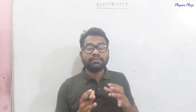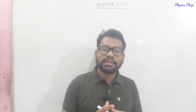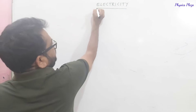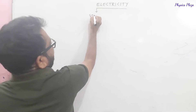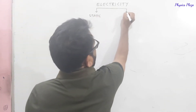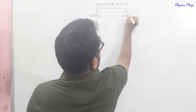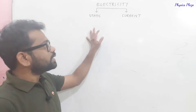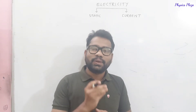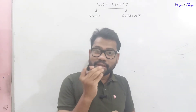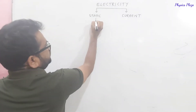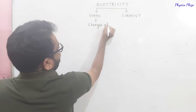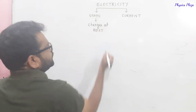Electricity is one of the important branches of physics, where we discuss about the charges and their impacts. It is of two types: static electricity and current electricity. Static means rest. So in static electricity, we discuss the charges which are at rest and their impacts — how they produce electric fields and their properties.